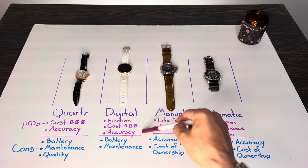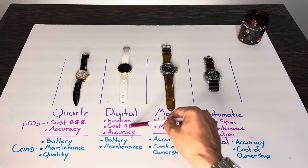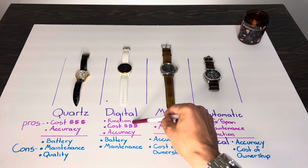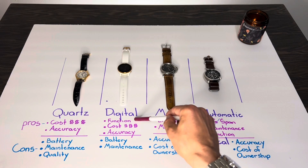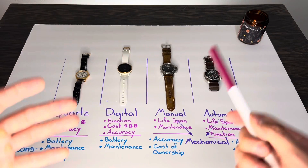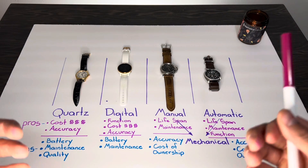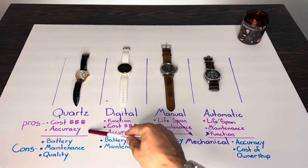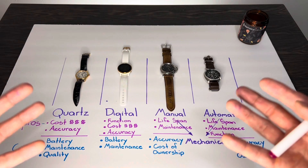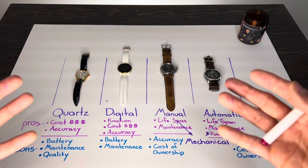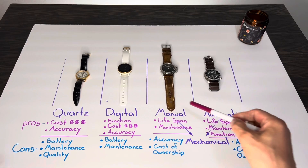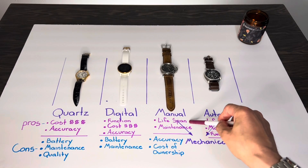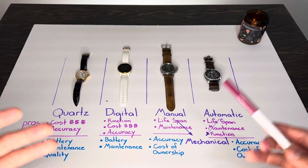In the digital world, accuracy and cost are very similar to your traditional quartz watch. On top of that, digital watches also provide much more functionality due to their software and the ability to display more functions on an LCD screen, as opposed to a traditional quartz watch which is limited in how many functions it can display.